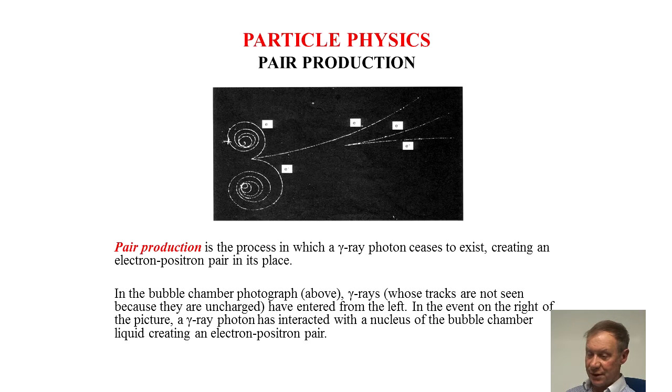In this event, on the right of the picture, a gamma ray photon has interacted with a nucleus of the bubble chamber liquid, creating an electron-positron pair, as shown.